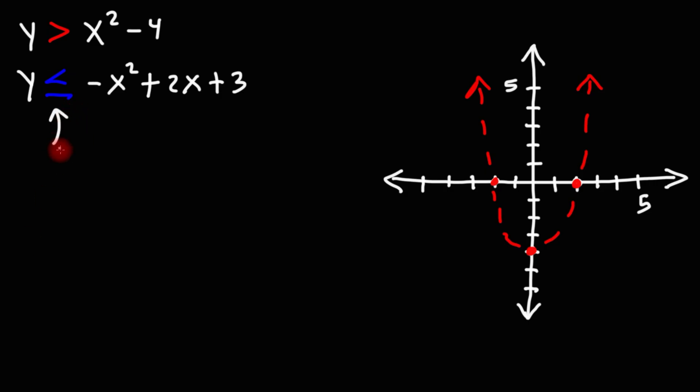Because of the equal part, we're going to use a solid line as opposed to dashed lines. Now, before we graph it, let's go ahead and find the x intercepts.